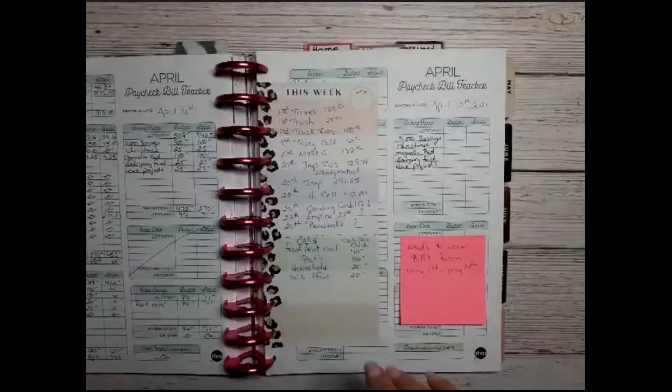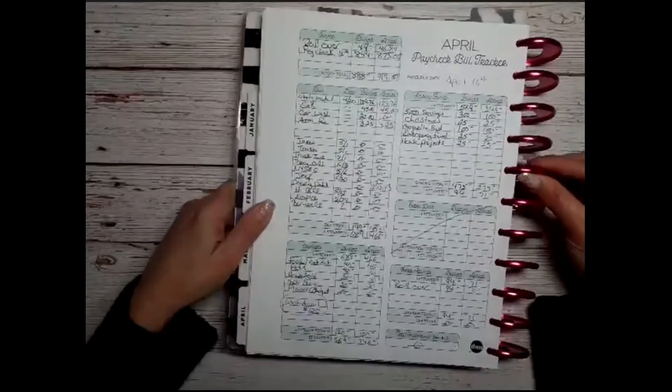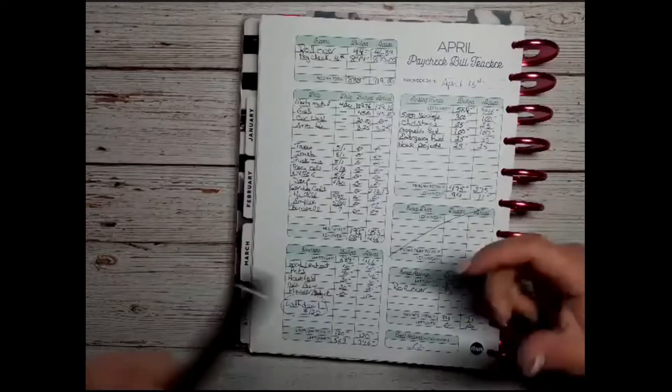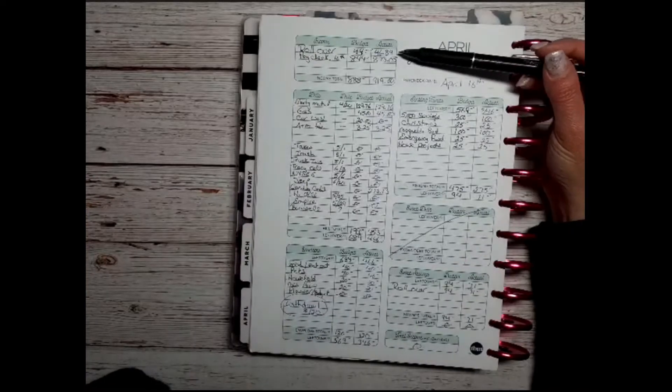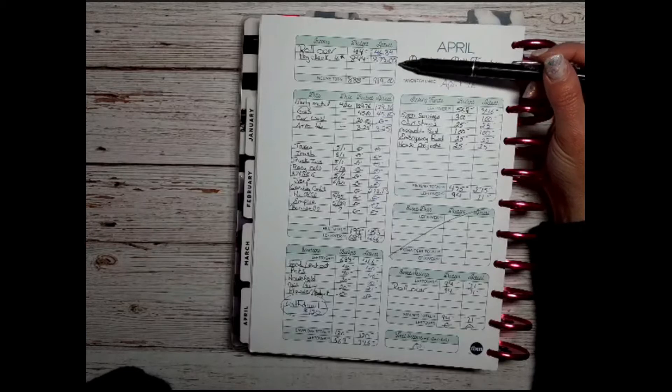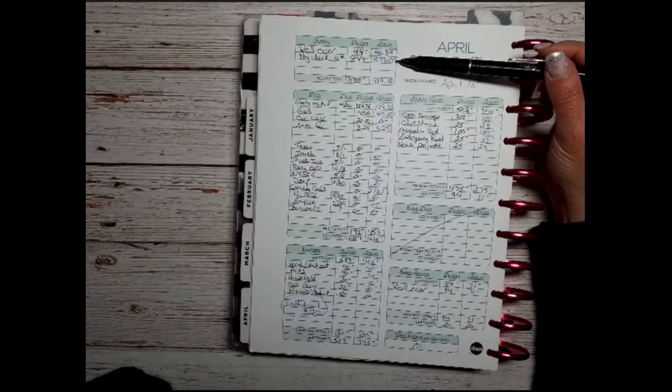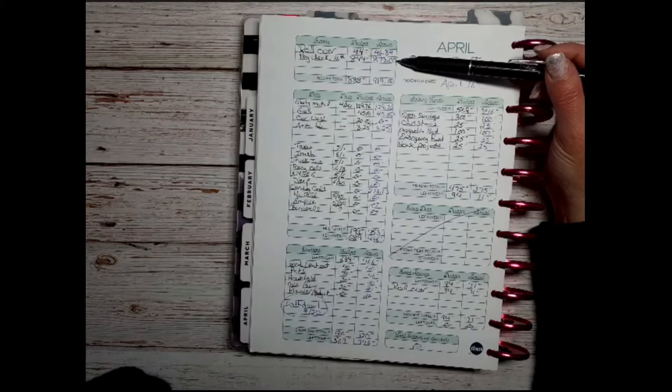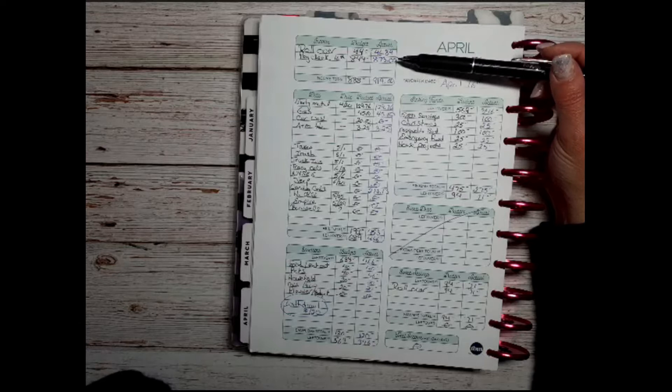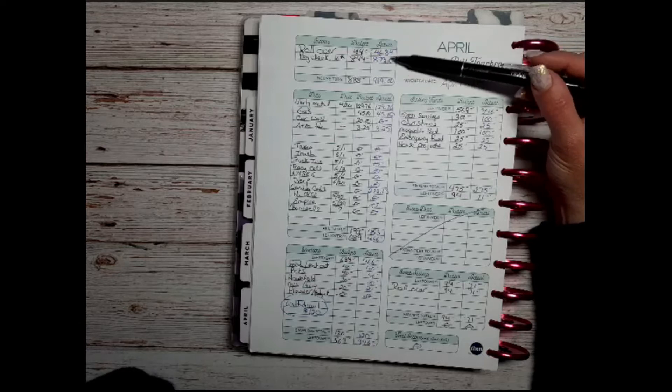So the paycheck is for April 16th. Our rollover was $46.84. My paycheck was $873.05. The company I work for is contributing more to our medical, so this is what my paycheck is going to be normally with no overtime or anything. So we add these together and I drop off the change for a little bit of savings, so that brings us to $919.